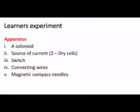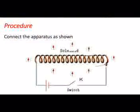We'll be looking at the magnetic field pattern that is formed in a solenoid. To do this, we are going to carry out a small demonstration. For this, we'll need a solenoid, a source of current, a switch, connecting wires, and magnetic compass needles.